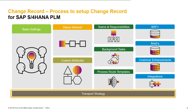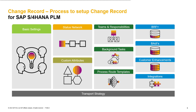Finally, you also need to make sure to have a sufficient transport strategy available. This is required for the whole process of setting up the change record. It is required to make sure your changes and enhancements are correctly transported from a development system, via test, to a productive landscape. Thank you everyone. I hope you now have a first overview of what kind of topics and tasks you need to consider in the process of setting up the change record. We will cover each topic in more detail in the upcoming videos, where you will also have the possibility to see the different customizing entries live in the system.